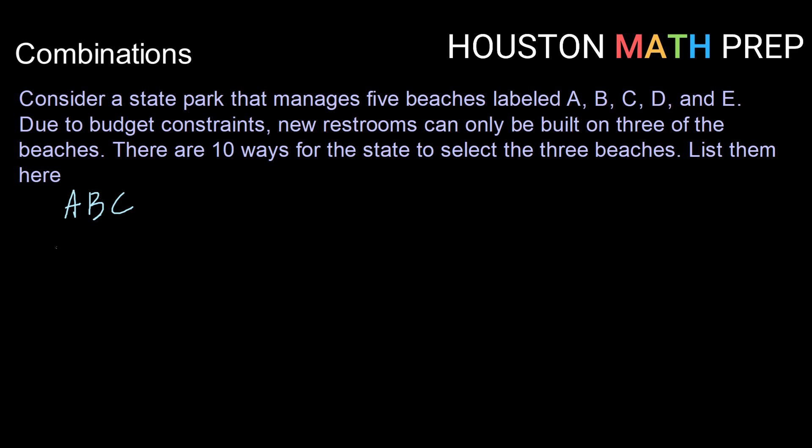So my next listing might be A, C, and D. That means beaches A, C, and D would get bathrooms and B and E do not. Continuing in this way, A, C, E would be an arrangement.